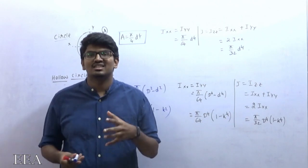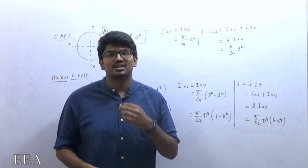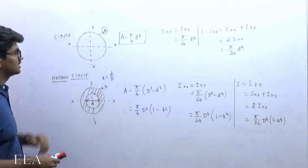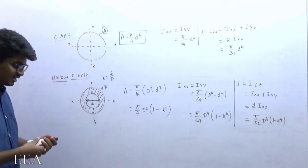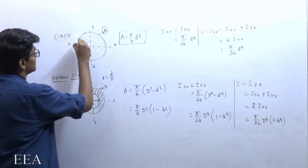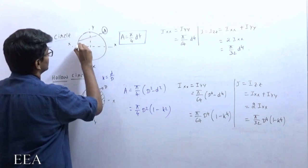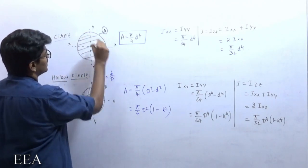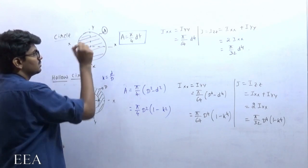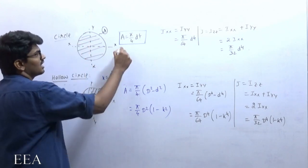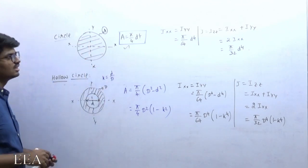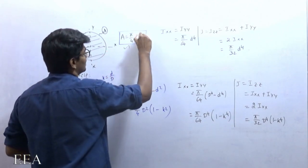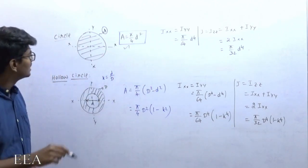Let us discuss some standard cases for polar moment of inertia. Starting with a circle — a planar circle where XX and YY axes are in the plane and ZZ is perpendicular to the plane. The area is π/4 · d².